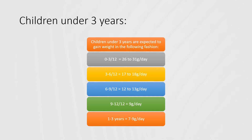For children under three years, the expected weight gain is as follows: zero to three months — 26 to 31 grams per day; three to six months — 17 to 18 grams per day; six to nine months — 12 to 13 grams per day; nine to twelve months — 9 grams per day; and one to three years — 7 to 9 grams per day.